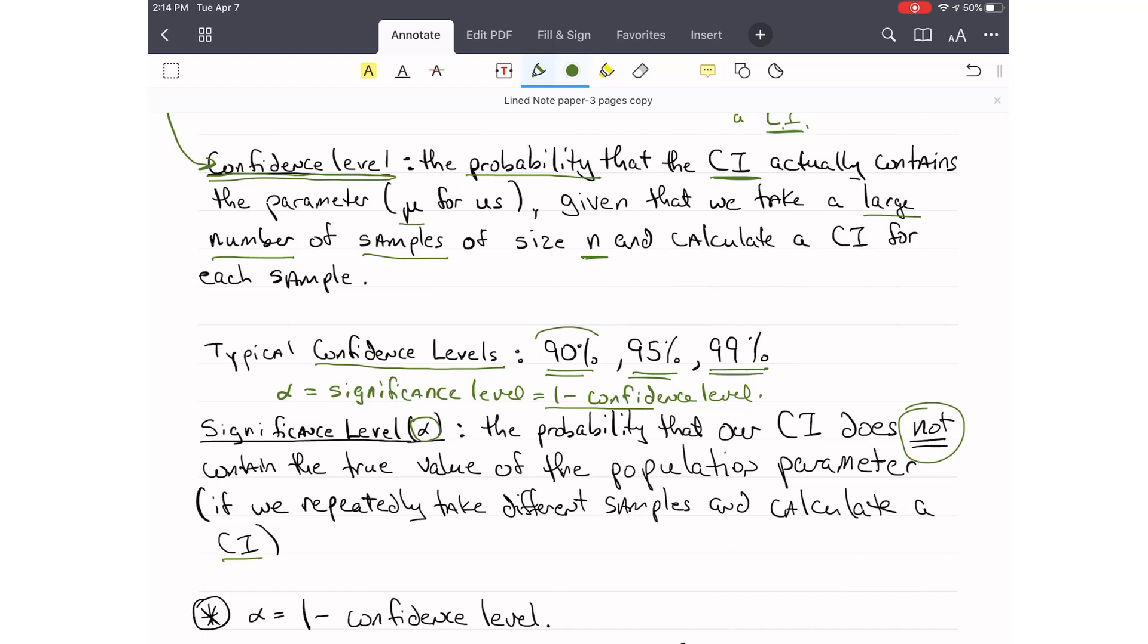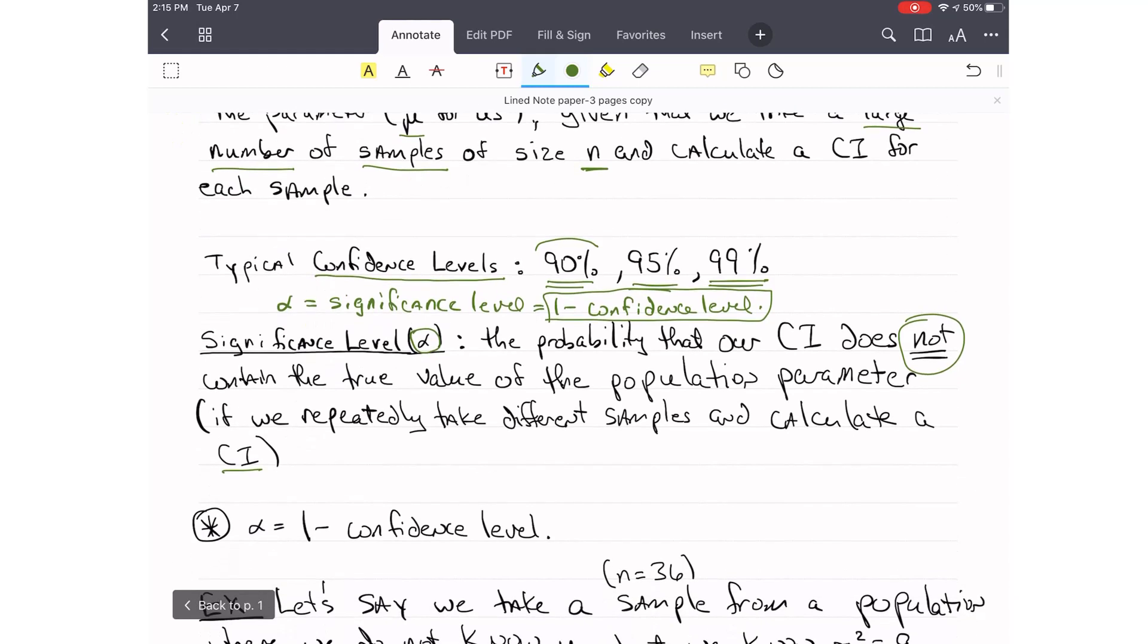it's basically a proportion. So if we repeatedly take different samples from the same population, the same size, and calculate a confidence interval for each one of these, then the proportion of confidence intervals that do not contain the mean or mu would be 1 minus the confidence level. And that's the significance level. I've given you this formula here, and I'm going to put it on the formula sheet so that it's there for you because you really need to know this formula to do some of the problems.